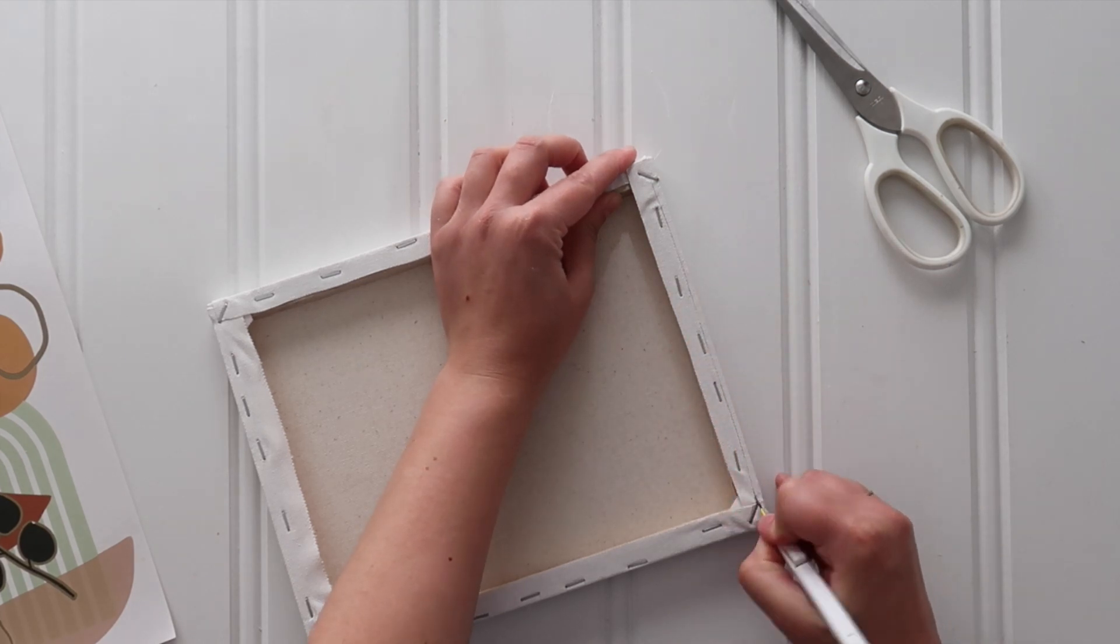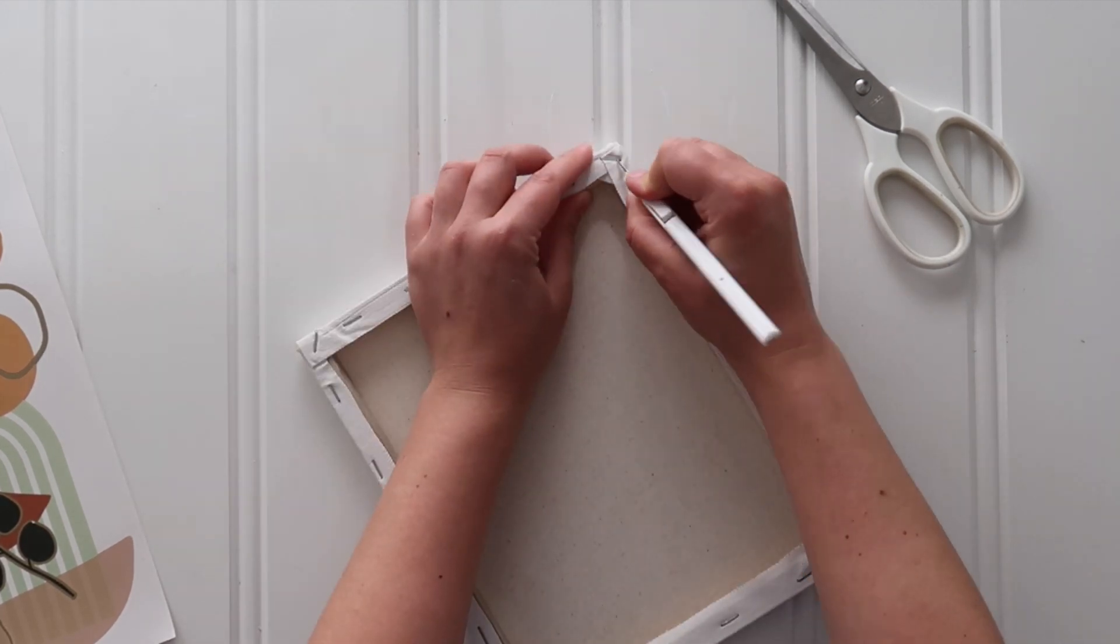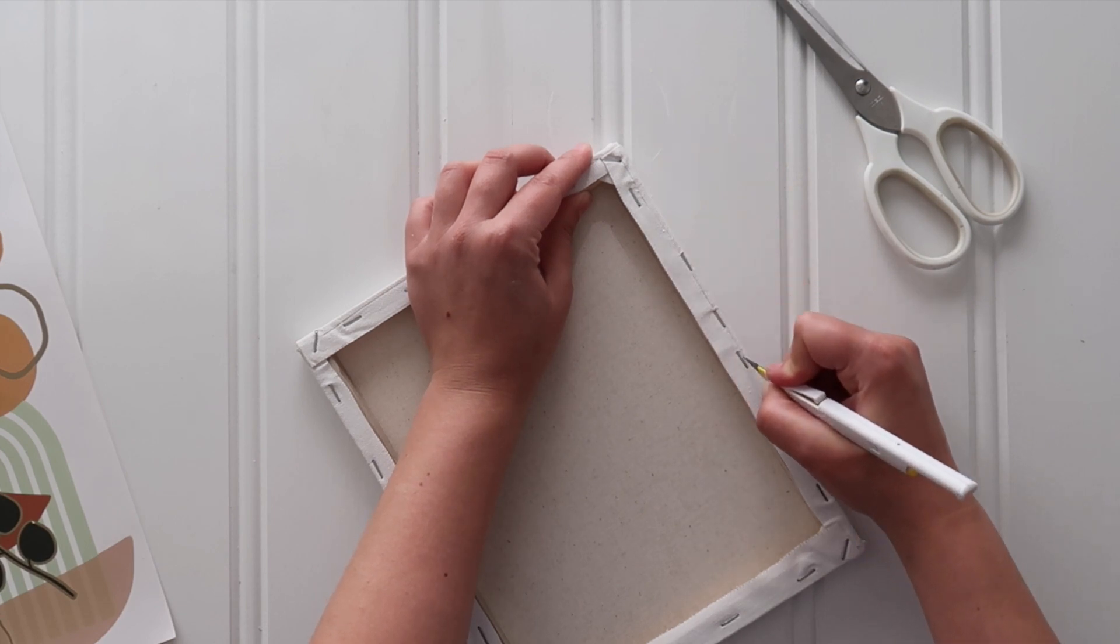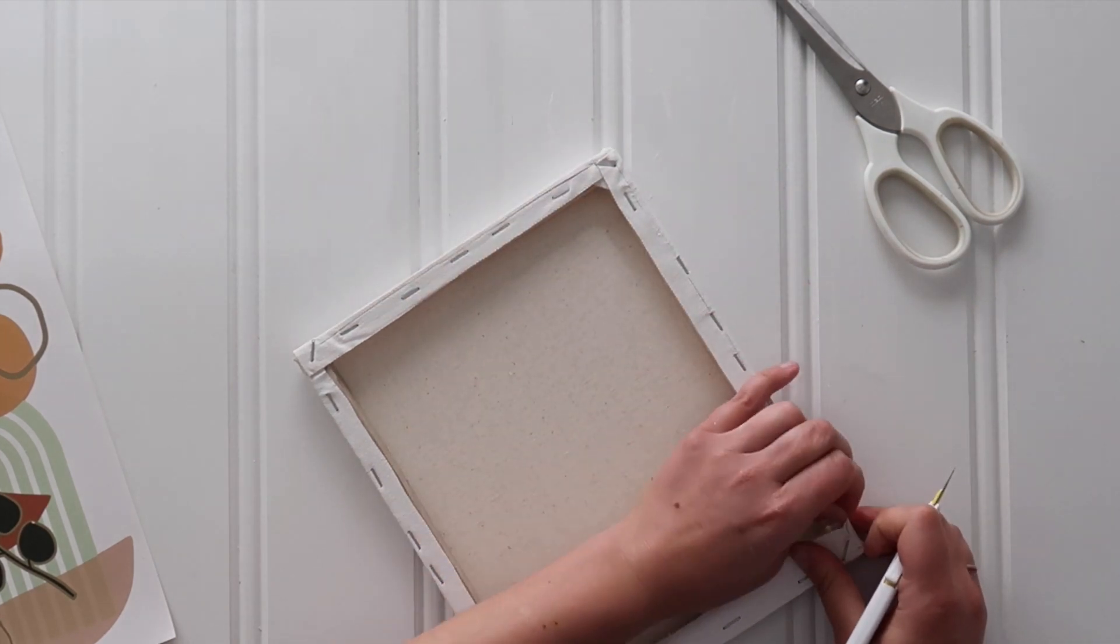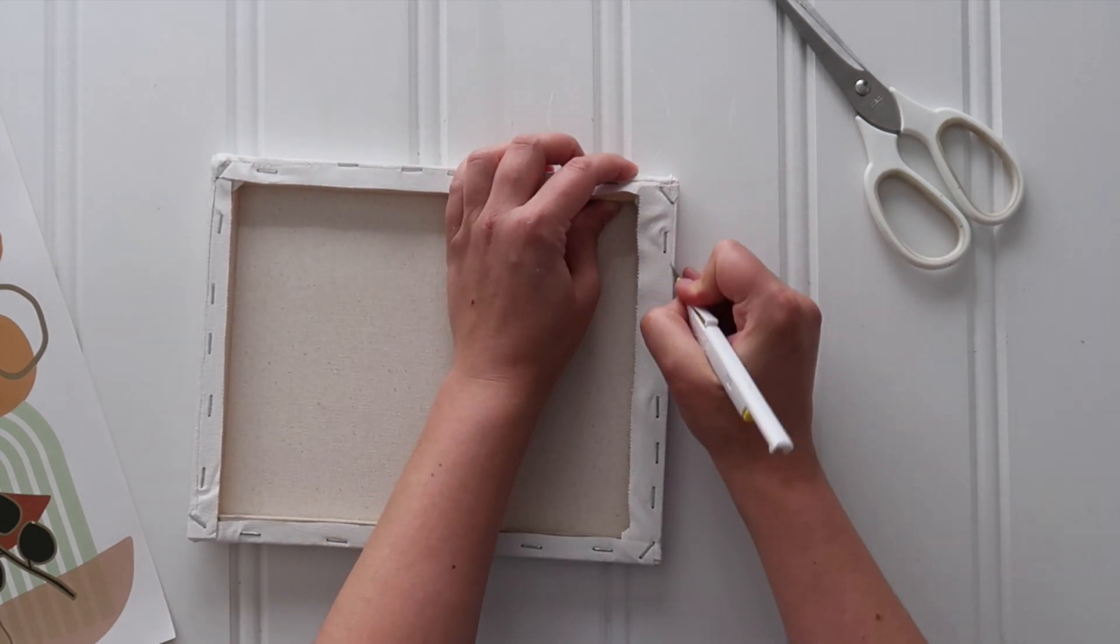You start on the back of the canvas and use—I use a pen blade, you can use a razor blade—but just very carefully score that canvas on the outside of that row of staples.